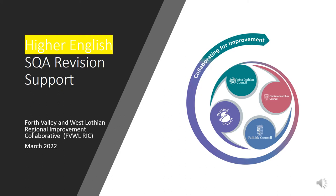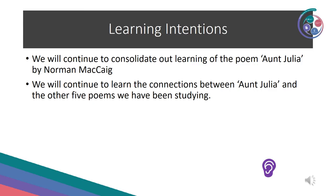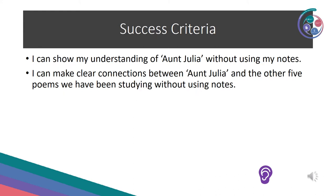Hello, welcome to Higher English SQA Revision Support. Our learning intentions are to continue consolidating our learning of the poem Aunt Julia by Norman McCaig, and to continue learning the connections between Aunt Julia and the other five poems we have been studying. Success criteria: I can show my understanding of Aunt Julia without using my notes, and I can make clear connections between Aunt Julia and the other five poems without using notes.